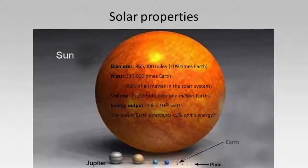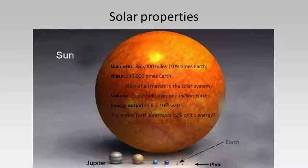The Sun produces tremendous energy — 10 to the 26th watts, that's 26 zeros. A tremendous amount of energy pours out of the Sun, and yet Earth only intercepts a very small amount of that, less than 1%.